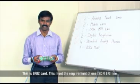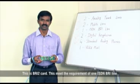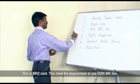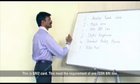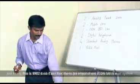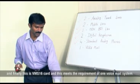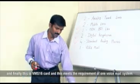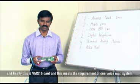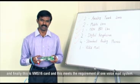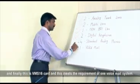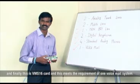This is BRI2 card. This meets the requirement of one ISDN BRI line. And finally, this is VMS16 card, and this meets the requirement of one voicemail system.